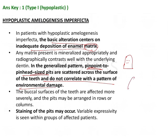When it comes to environmental damage, the hypocalcification will be seen as a band, and depending on the tooth and the time at which the environmental damage occurred, it will appear at different levels on different teeth. The buccal surfaces of the teeth are affected more severely, and the pits may be arranged in rows or columns. Staining may occur, which is why patients seek aesthetic treatment.